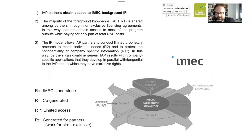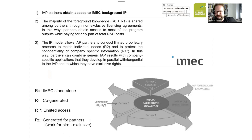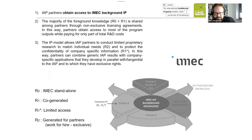What they've done smartly, they've established different kinds of IP. They have a first class of IP which was generated exclusively by iMac. This is R0, the iMac standalone IP, that the partners can get access to.